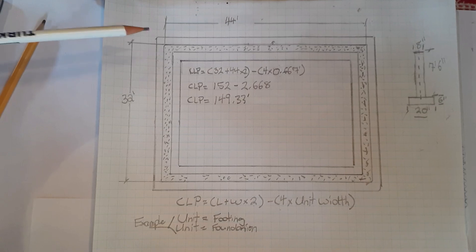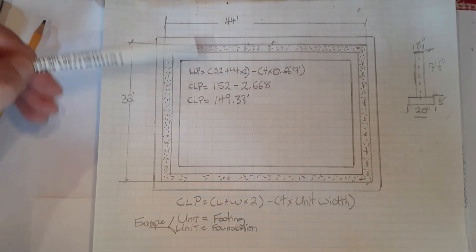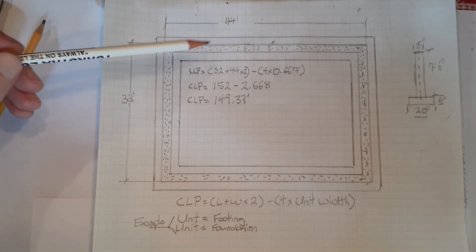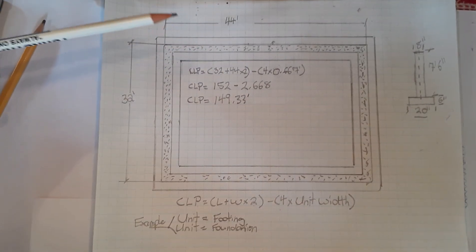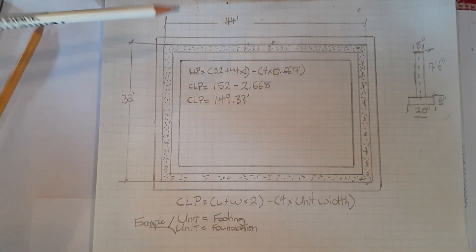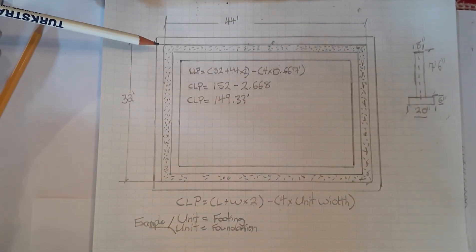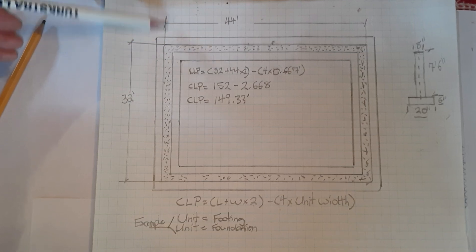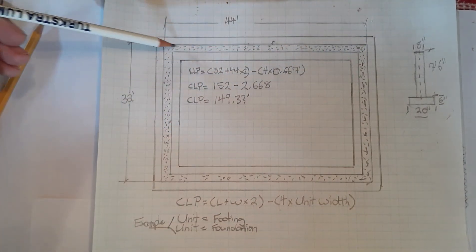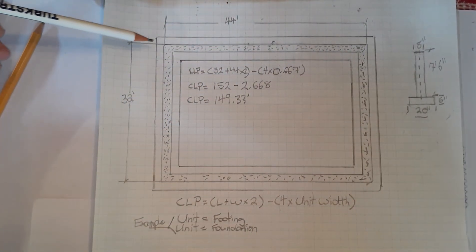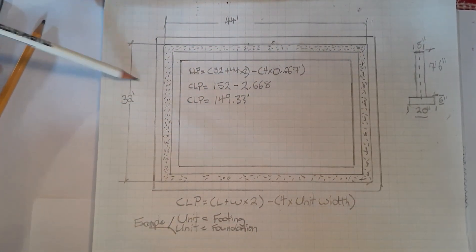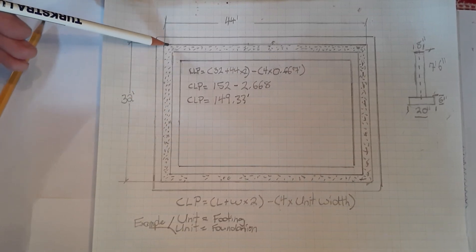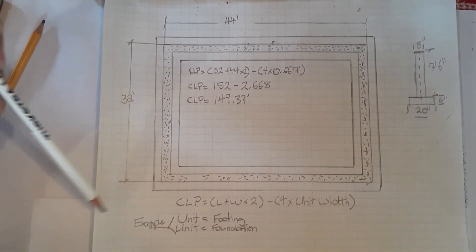What we can do is figure out the one centerline perimeter for both of these units — the foundation and the footing — in one step. When we're looking at construction drawings, we're always given the outside dimension of the building itself, not the footings underneath. So the building itself is 44 feet long and 32 feet wide, both measured from outside of foundation wall to outside of foundation wall.